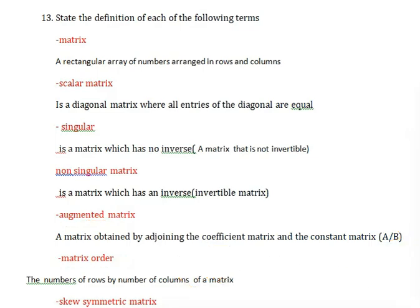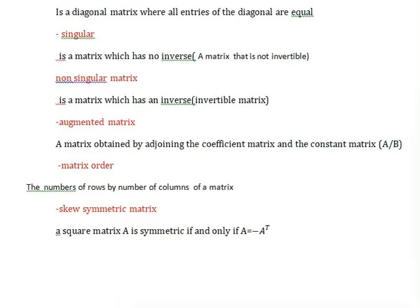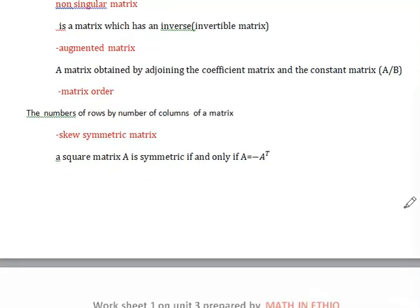Skew symmetric matrix: A square matrix is skew symmetric if and only if A is equal to negative of A transpose.